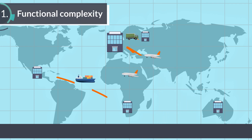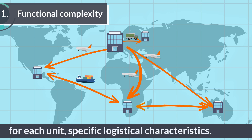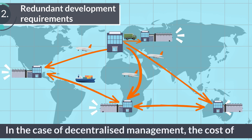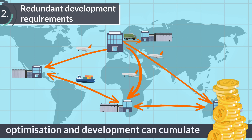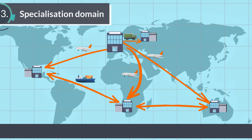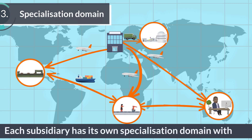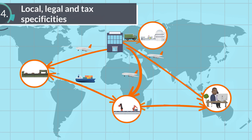First of all, each country has its own functional complexity with, for each unit, specific logistical characteristics. Then, you might have redundant development requirements. In case of decentralized management, the costs of optimization and development can accumulate. Then, each subsidiary has its own specialization domain with its own business specificities and requirements. Not to mention the local, legal and tax specificities.